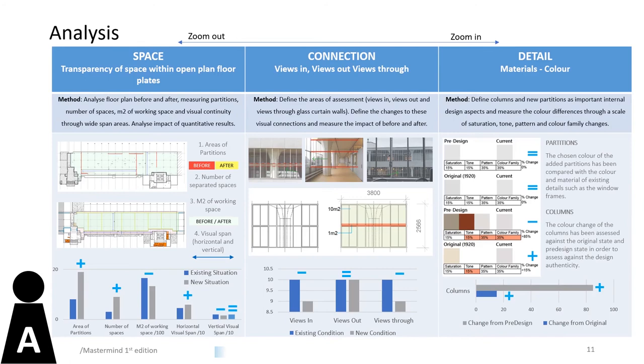Each indicator is assessed for the degree of change and the compatibility of design. Quantitative analysis describes the degree of change through added, remaining and subtracted areas. Space and detail show moderate degrees of change, whereas connection is only slight. The presence of change cannot equate to a positive or negative result without equally qualifying its compatibility.